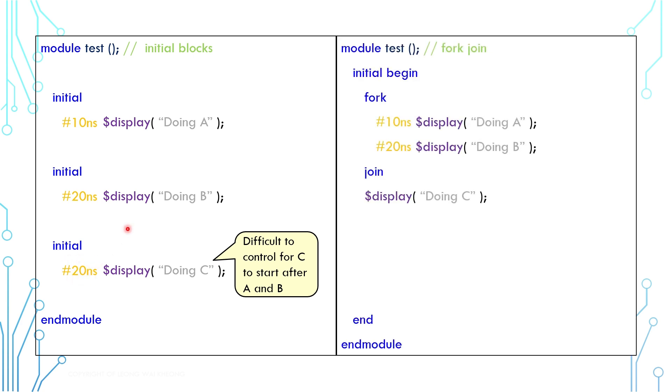And that's how fork join construct helps. In an initial block, everything runs sequentially. We can add a fork join construct. Everything in the construct will run in parallel. In this example, A and B run in parallel, and C runs after A and B finish.